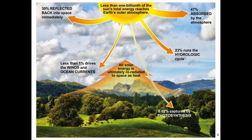The image states that less than one billionth of the sun's total energy reaches the Earth's outer atmosphere. What I want you to focus on is that 0.02% is captured by photosynthesis. There is a vast amount of energy coming from the sun, and only a very small fraction is actually being used to produce organic material through photosynthesis. Not to mention, the majority of the photosynthesis going on in the Earth isn't due to plants or organisms we see with our eyes — it's being done by algae in the ocean.